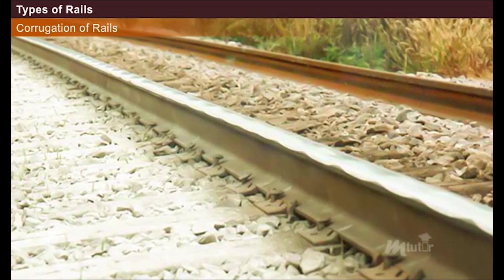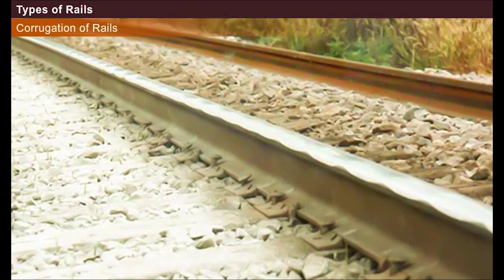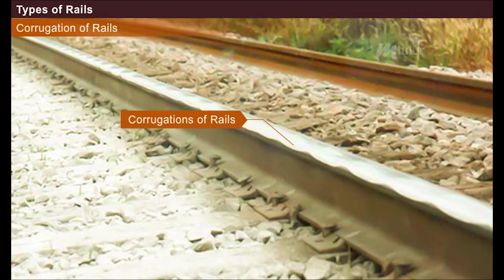Besides this, minute depressions are also formed on the rail surface at irregular intervals called as corrugations of rails.